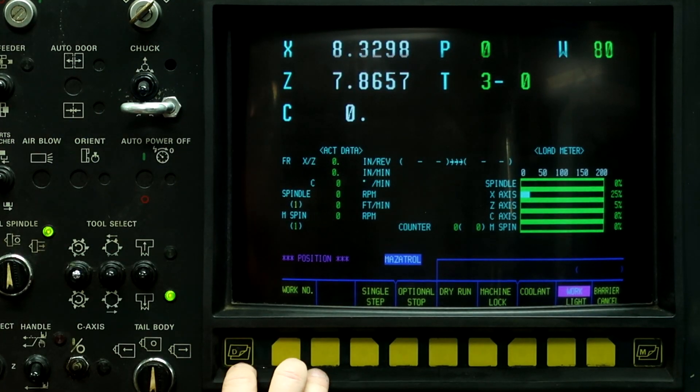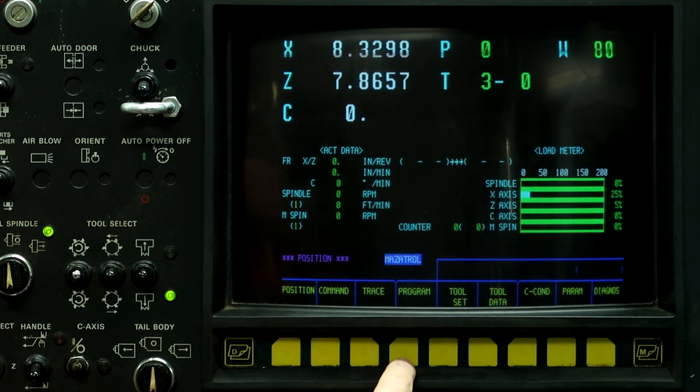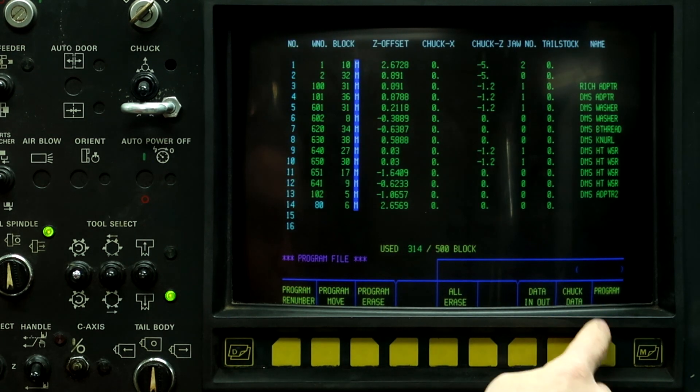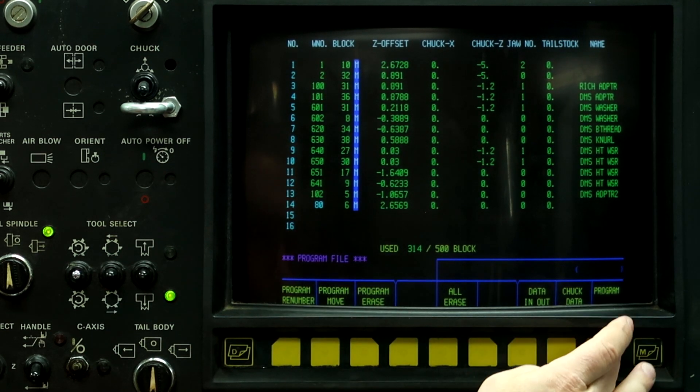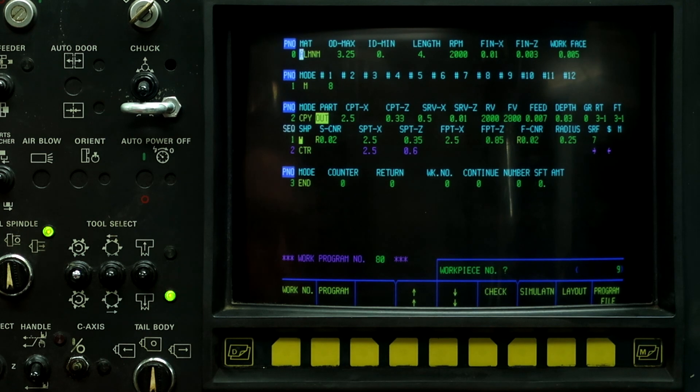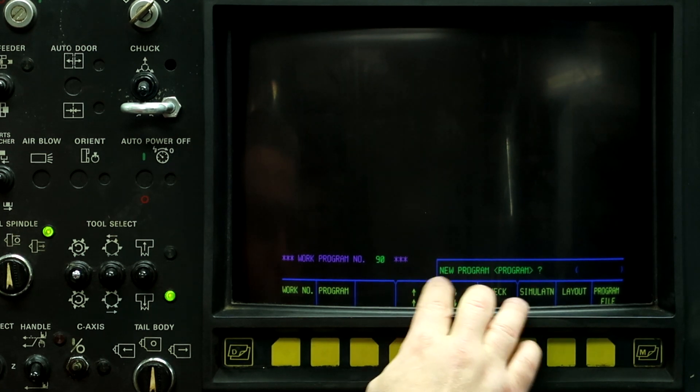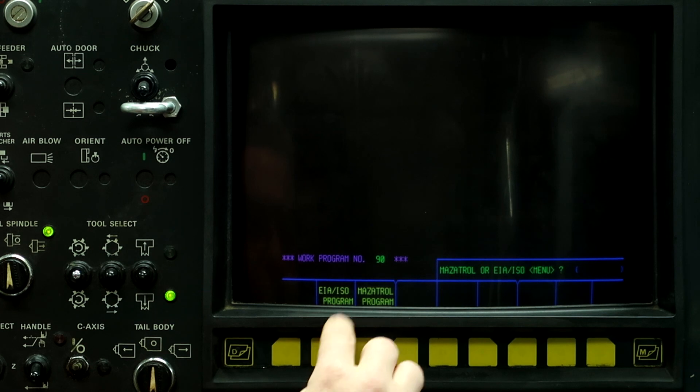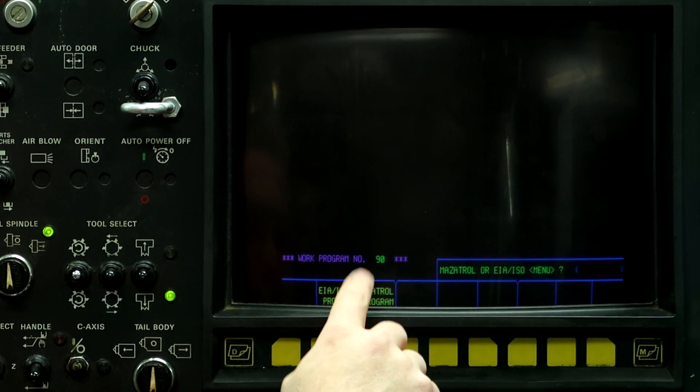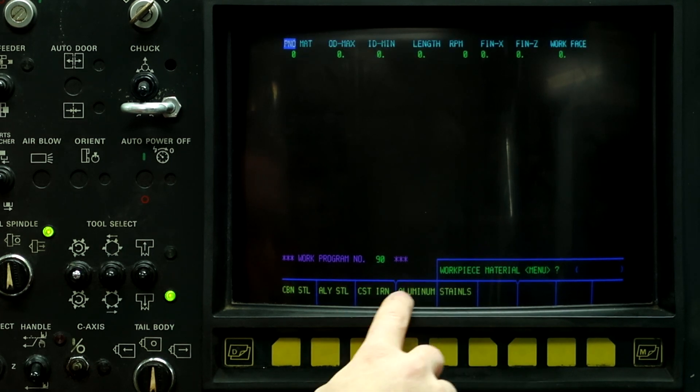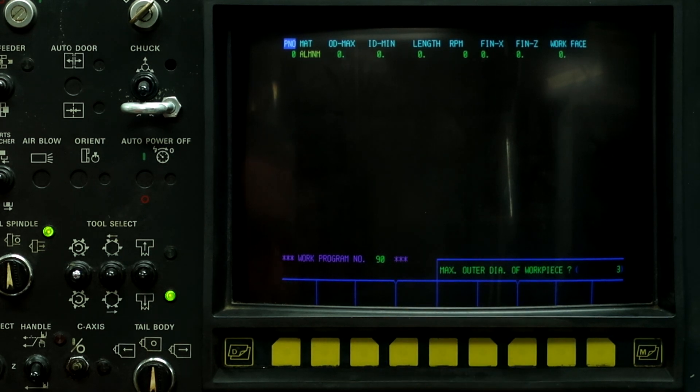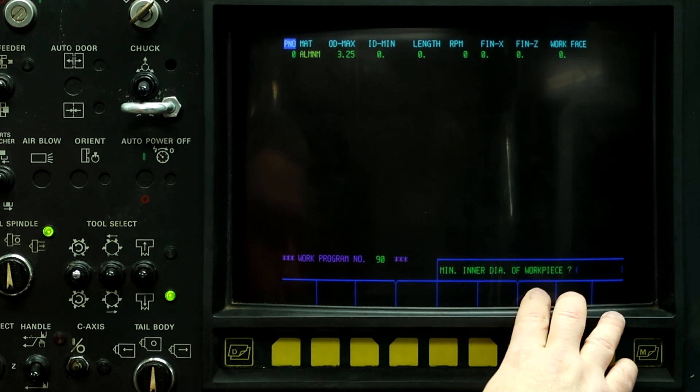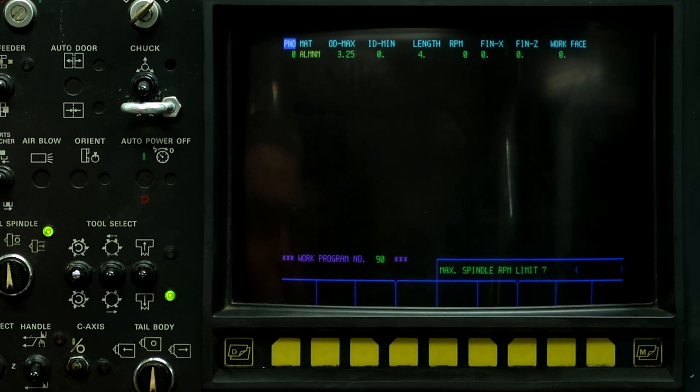So what we're going to do, push the left button, go to program, program file, and we're going to select work number 90. So go back to program, work number 90, input. If it's a new program, push the program button, Mazatrol or EIA, going with Mazatrol. Work piece material is aluminum. Max outside diameter is 3.25 inches. Inside diameter is zero. Work piece length is four inches long.